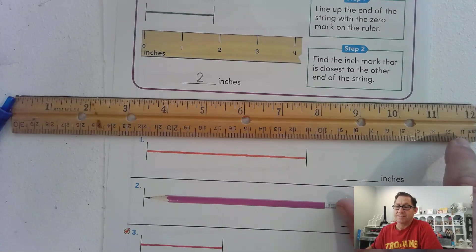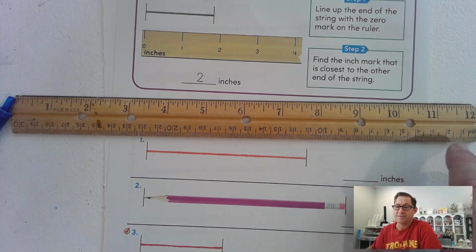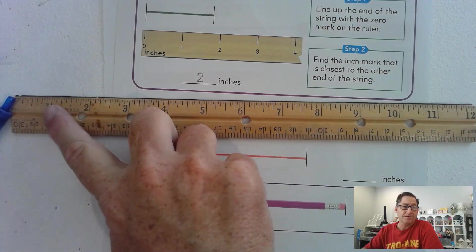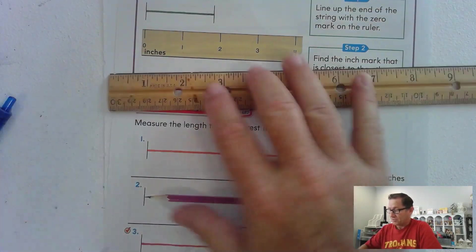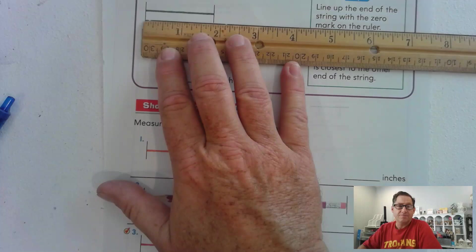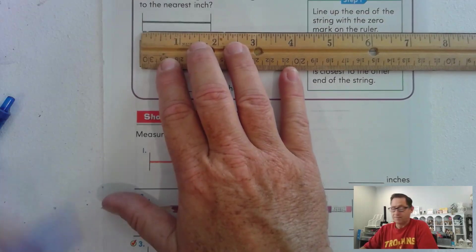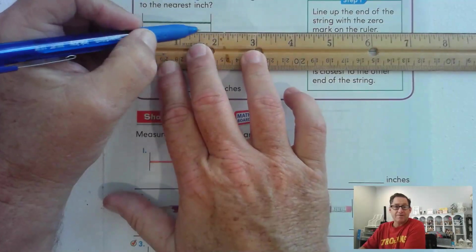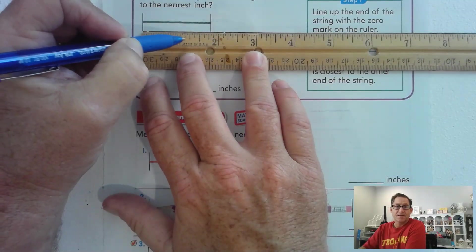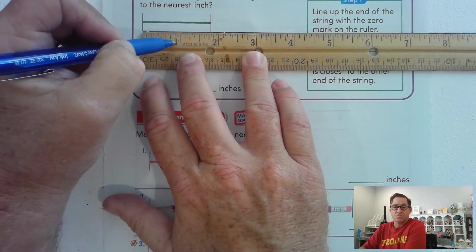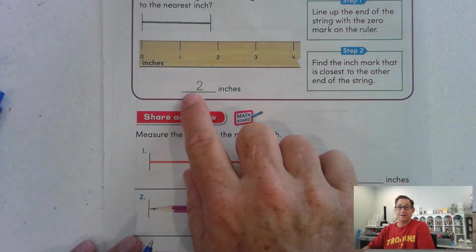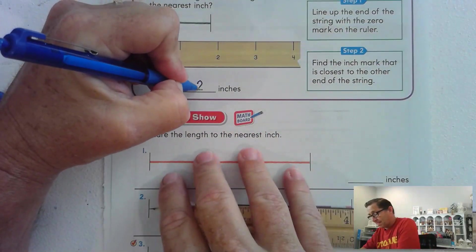In this case, the numbers on the opposite side are centimeters and the little marks in between are called millimeters. So again, we're focusing on just the inch marks. It says, what is the length of the string to the nearest inch? So we'd line up our string with the zero mark, which is the end of the ruler, and we'd see how far it is. So it hasn't reached two, but it's past one. It's closer to two than it is to one. So we'd say this one is to the nearest inch is two inches. That's what they're saying here.